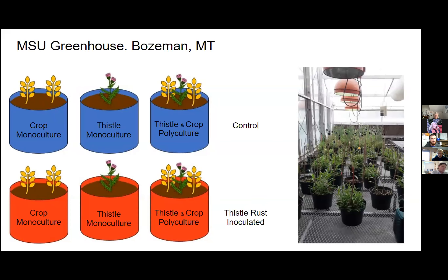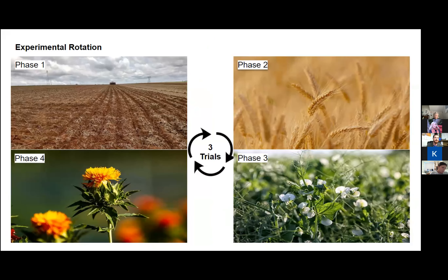We're also looking into the impacts of competition at the MSU greenhouse in Bozeman. We have two treatments: a control where we grow Canada thistle without the pathogen, and an inoculated treatment where we inoculate Canada thistle rosettes with the thistle rust pathogen. We're trying to see how competition impacts Canada thistle when it is infected versus not infected. We have a four-phase cropping rotation: phase one is simulated fallow, phase two is hard red spring wheat, phase three is forage pea, and phase four is safflower.